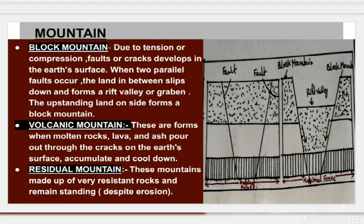Next, block mountains. Due to tension or compression, faults or cracks develop in the earth's surface. When two parallel faults occur, the land in between slips down and forms a rift valley or graben. The upstanding land on the other side forms a block mountain.